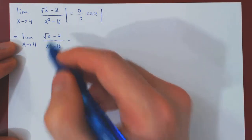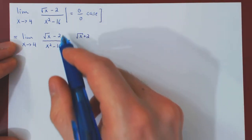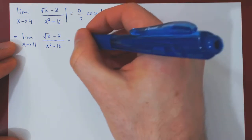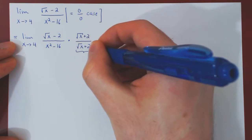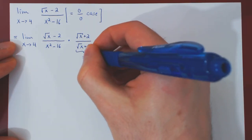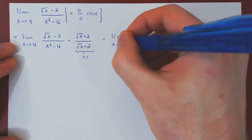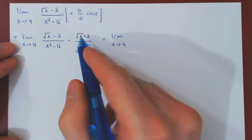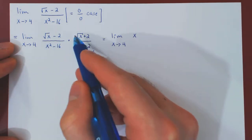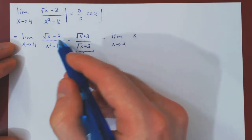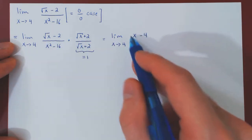The conjugate of root of x minus 2 is root of x plus 2. But we can only multiply an expression by 1 so as not to change it, so we also divide by root of x plus 2, as the quotient is simply 1. Now, multiplying the numerator by its conjugate: root of x times root of x is x, plus 2 root of x minus 2 root of x — these two terms cancel — plus minus 2 times 2 gives minus 4. So on the numerator we're left with simply x minus 4.